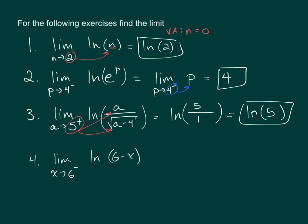In this last example, the domain for this natural log is from negative infinity all the way until 6, which you cannot include. If you set the argument equal to 0, 6 minus x equals 0, and solve for x, you have a vertical asymptote at x equals 6.